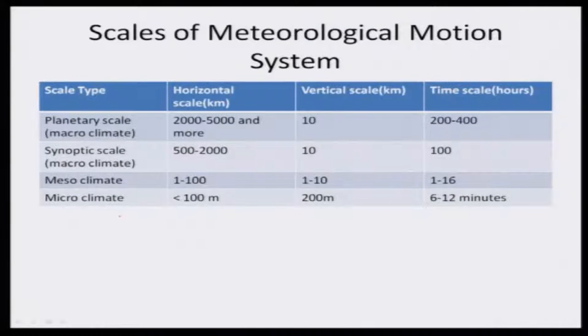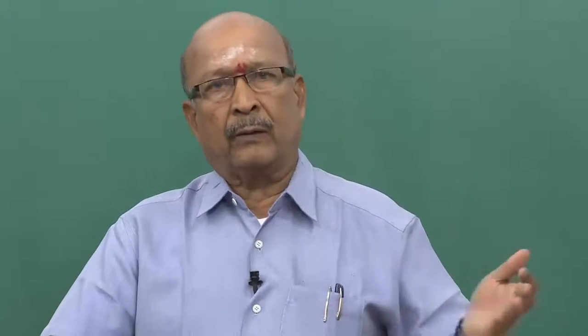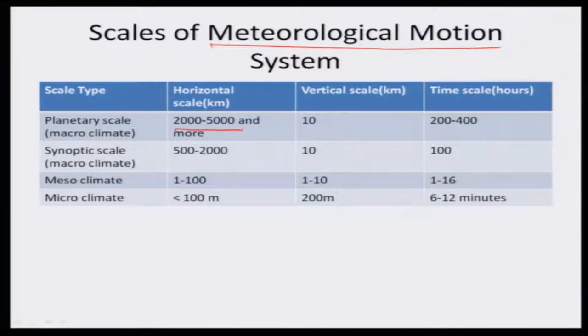Now let us move to the scales of meteorological motion — this is very, very important. Unless you understand the meteorological scale, it is very difficult to develop weather forecast or to interpret weather forecast. One is the planetary scale. The word itself indicates that it covers entire parts of different countries. The horizontal scale is 2000 to 5000 kilometers and more. Entire India is covered under this horizontal scale, and the vertical scale is 10 kilometers, covering the entire troposphere that we were discussing in the first week.